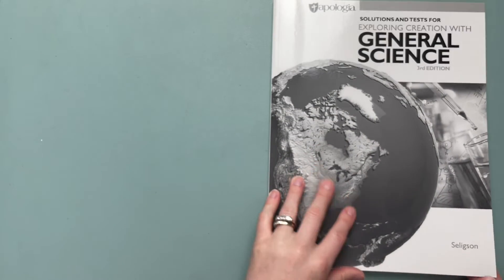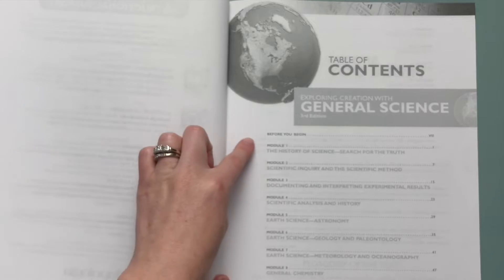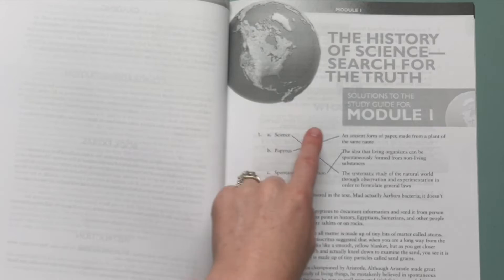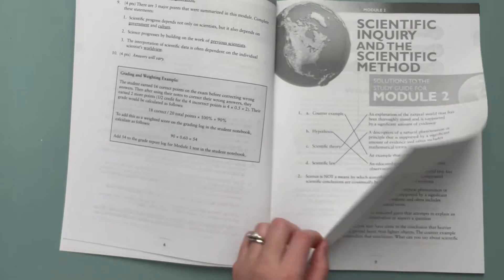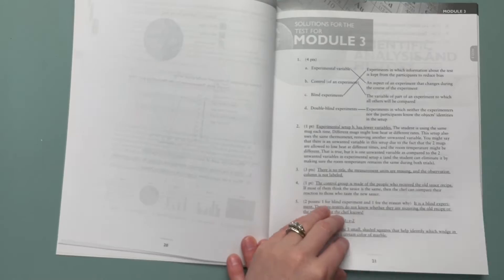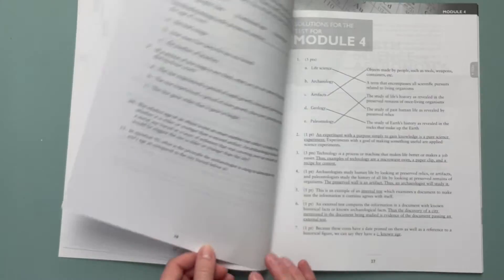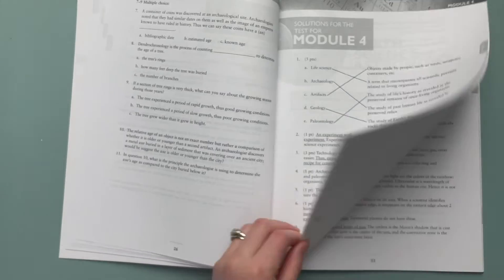And the solutions and tests are in this book okay so it has your modules here so these are the solutions for the study guides for every module, the test solutions and then the solutions for the study guide. So this will kind of give you an idea of the way the teacher solution book is set up.